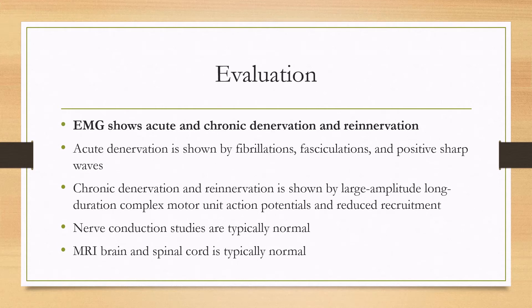For evaluation, the EMG will show acute and chronic denervation and re-innervation. Acute denervation can be shown by fibrillations, fasciculations, and positive sharp waves, while chronic denervation and re-innervation is shown by large amplitude, long duration, complex motor unit action potentials and reduced recruitment.